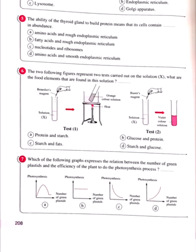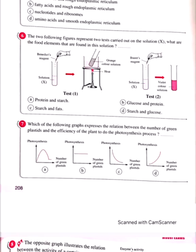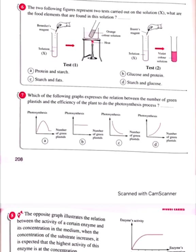Question number 6: Two tests are carried out on solution X. When Benedict's reagent is added and heated, it turns orange — this indicates glucose is present. When Biuret reagent is added, a violet color appears — this is a positive result for protein. Therefore, the food elements found in solution X are glucose and protein. The correct answer is B.